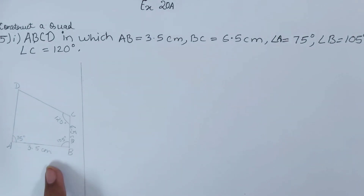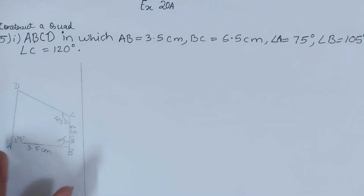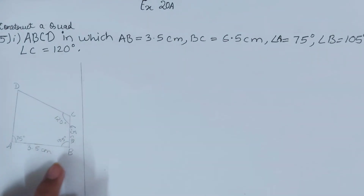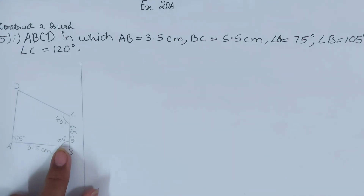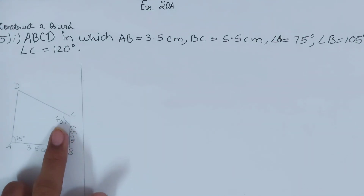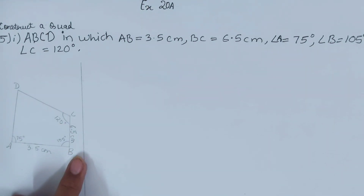You can see I've got a rough figure of the quadrilateral. In this quadrilateral, AB = 3.5 cm, BC = 6.5 cm, angle A = 75°, angle B = 105°, and angle C = 120°. We have to construct these three angles and two included sides.